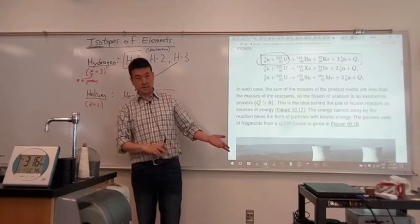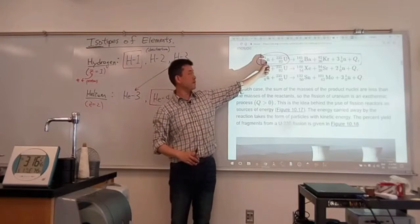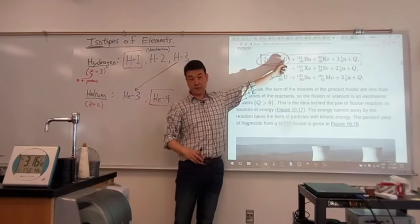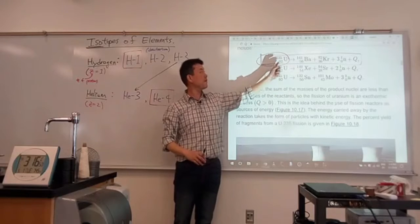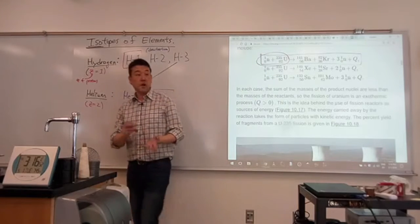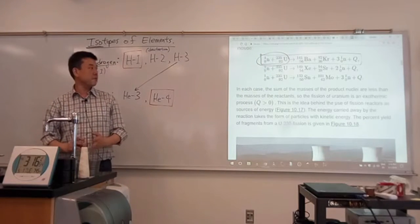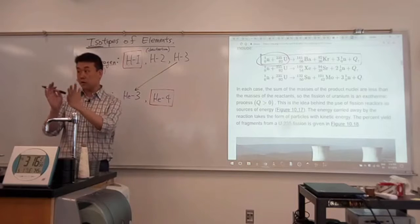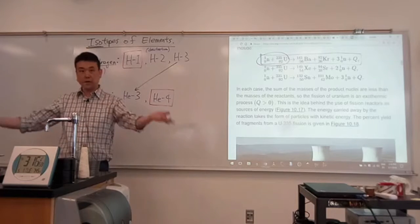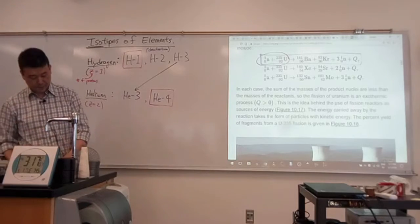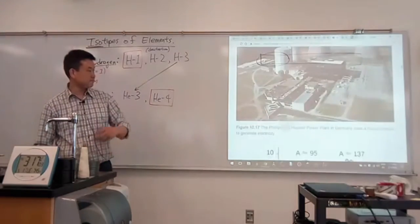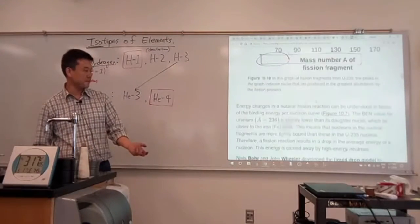So in a fission reaction, it's a stimulated process. You have something else that's impacting that nucleus, neutron impacting that nucleus, that's causing a kind of unstable state to occur first. And then it splits off.